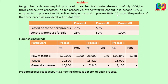Process 3 realizes Rs.20. Now, once a process is complete, the output is not entirely transferred to the next process. 75% goes to the next process, and from Process 1, 25% is sent to warehouse for sale.